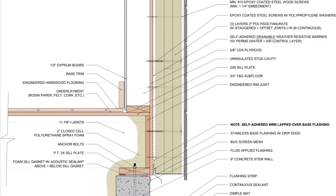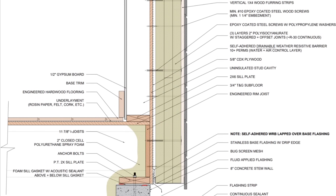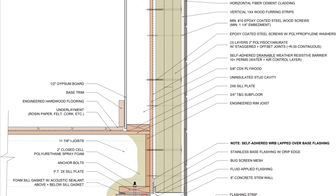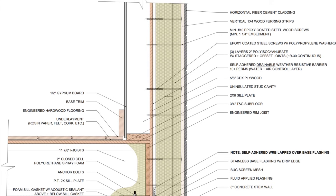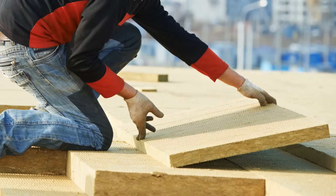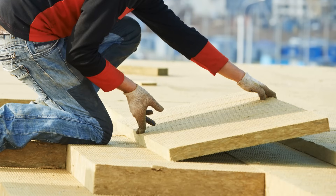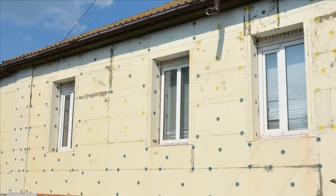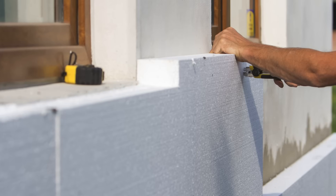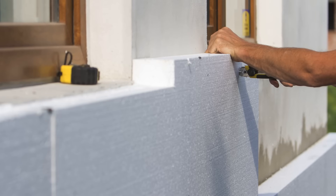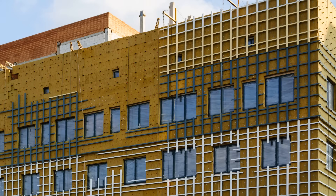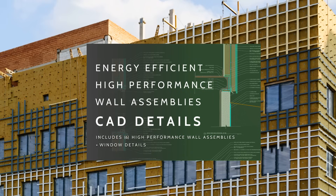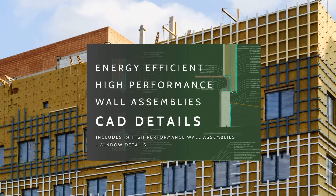If we can install all of the insulation outboard of the sheathing, or almost all of it outboard, this is what we call the perfect assembly, since the condensation risks have been eliminated, the structural components are kept warm and at interior temperatures, helping them to dry out if they get wet, and we have virtually no thermal bridging. Of course, the strategy can be expensive, but it's by far the best solution if we want the benefits of both energy efficiency and long-term durability. We actually have some CAD details available on my website for exterior insulation — I'll put a link to those in the description below.